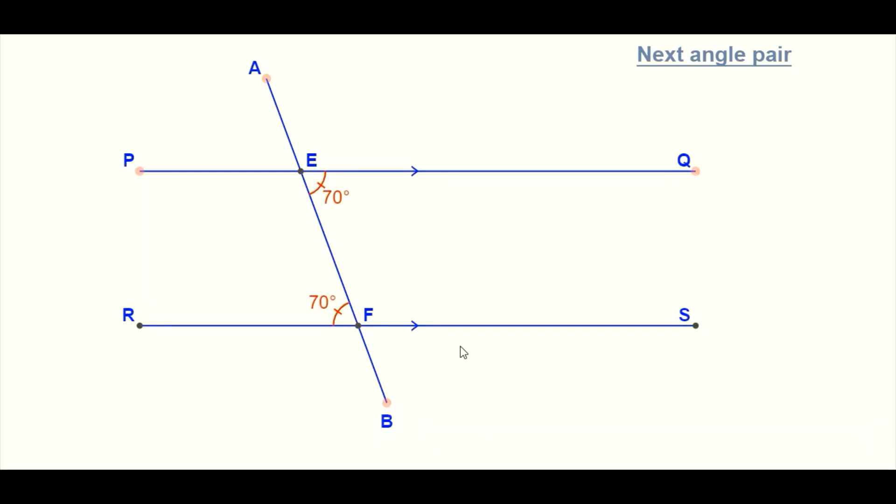Now if you note here that the line segment QE and EF along with FR creates a Z. So these angles are what we call alternate angles.